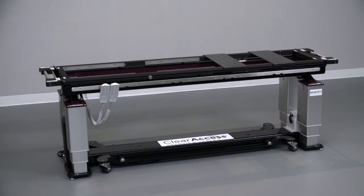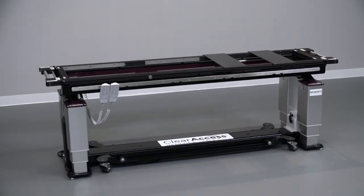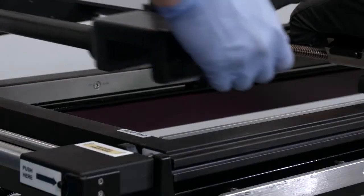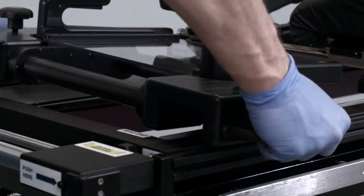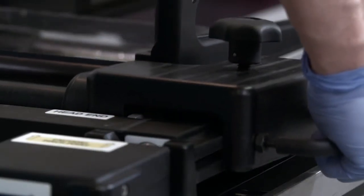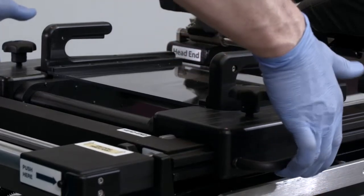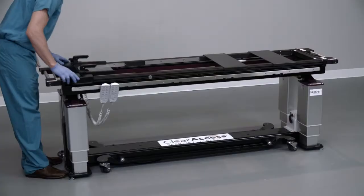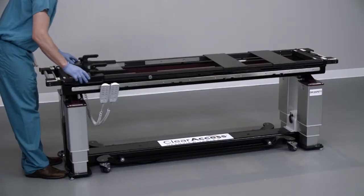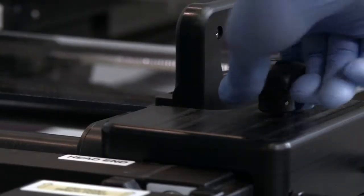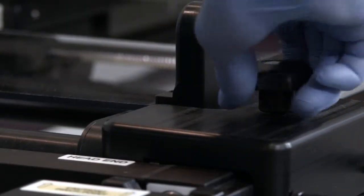Install the ClearAccess head support by grasping the installation handles on either side of the device. Hover the head support over the head end of the table and pull outward on the installation handles. Place the head system onto the prone platform and release the handles. Verify that the head support is engaged by lifting up on the handles without pulling outward. Slide the head support to the desired location and lock in place by tightening both locking knobs.